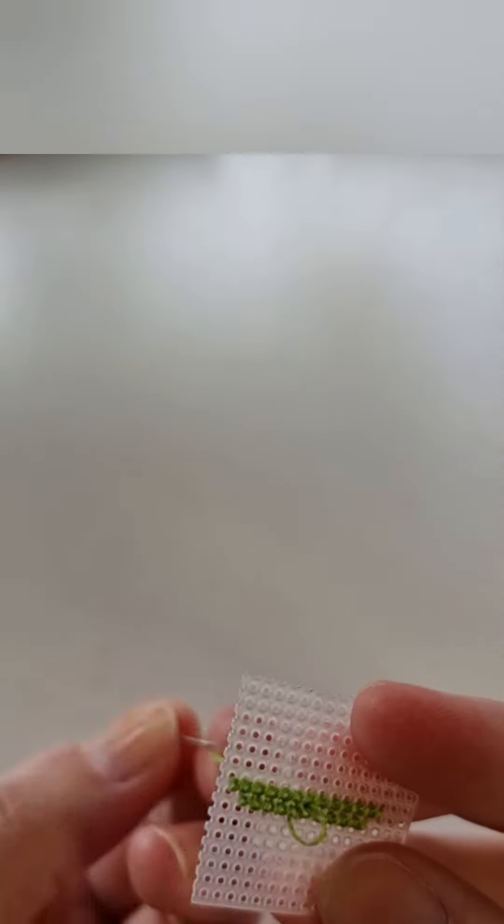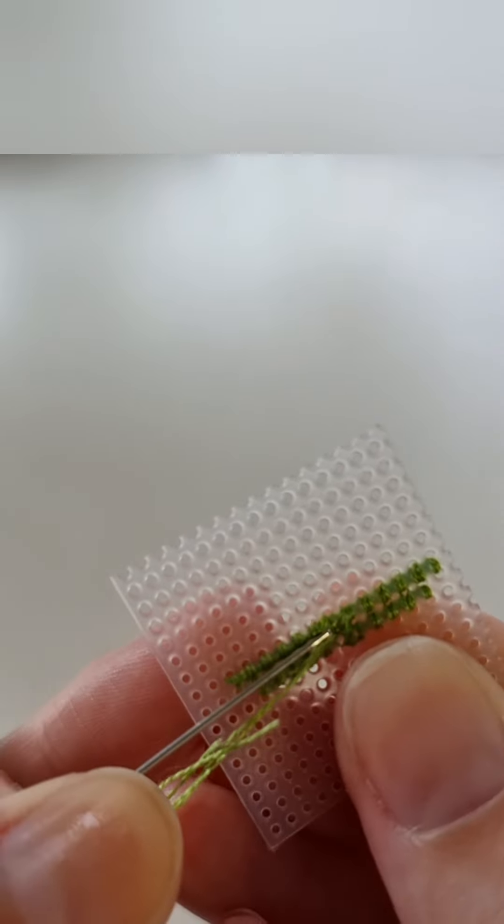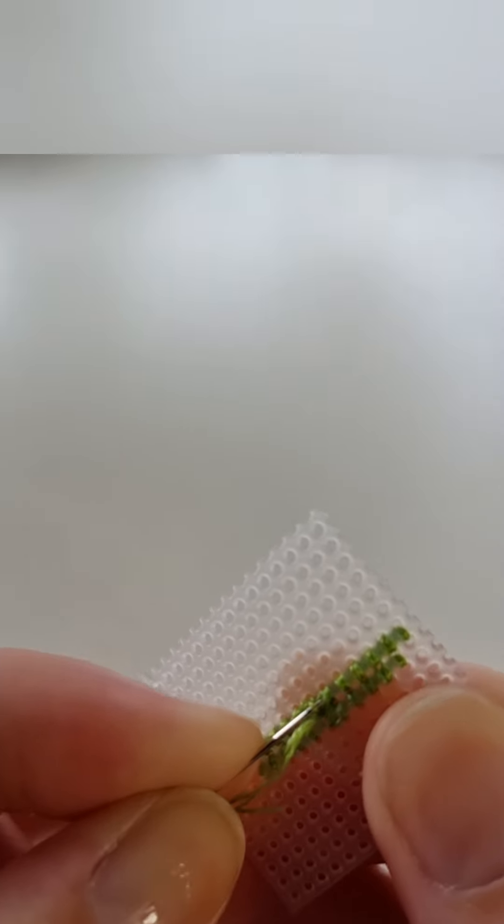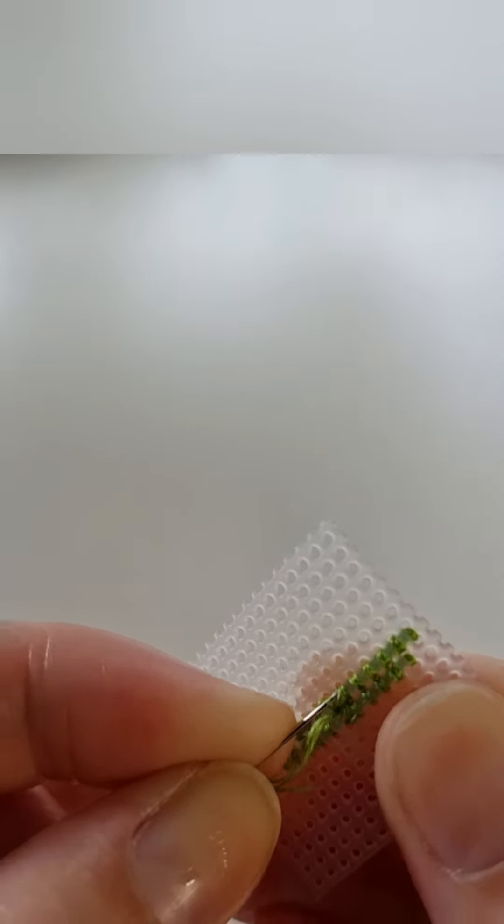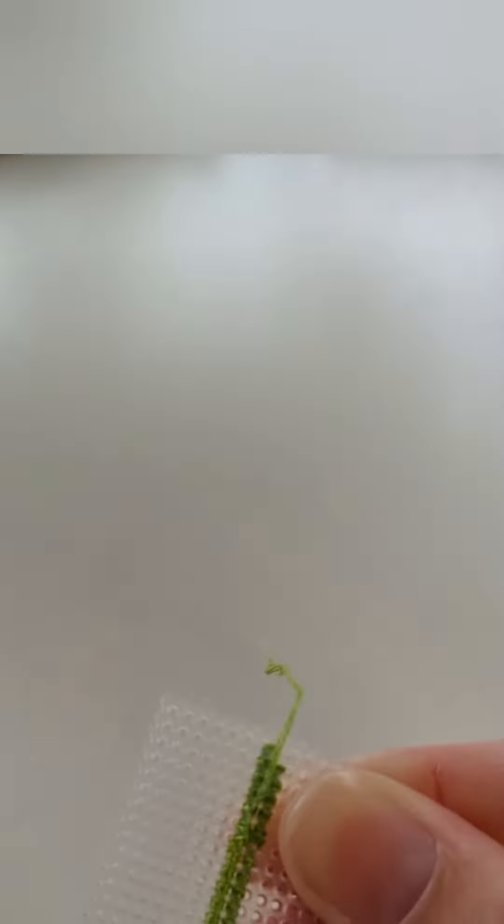When I've finished stitching with one color I'll pass my needle through the back of my thread so that it's secure. This is a little bit tricky to do on plastic canvas so you may need some patience for this bit. Catch the stitches as securely as you can and then snip off the excess.